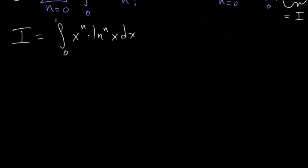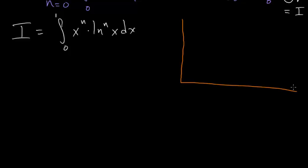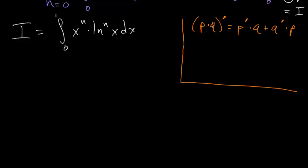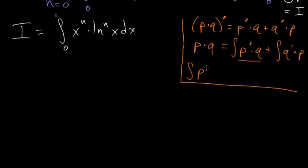Recall the formula for integration by parts just comes out of the product rule for derivatives: p-prime times q plus q-prime times p. If we integrate everything with respect to x, the integral of the derivative is just equal to the function. So the integral of p-prime times q equals p times q minus the integral of q-prime times p. This is really just a fast, non-rigorous way to derive this formula.